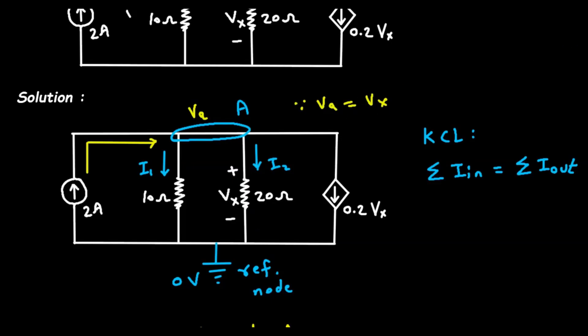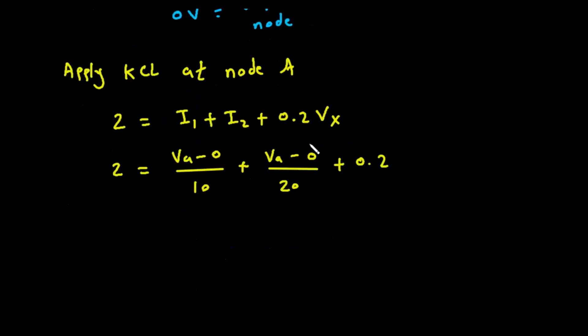So now in place of this Vx we can substitute Va. So let's put Va, this will be easier to solve and get the value of Va. Then from Va we can find the value of Vx. So now let's simplify this, it will be 2 equals Va upon 10 plus Va upon 20 plus 0.2Va.